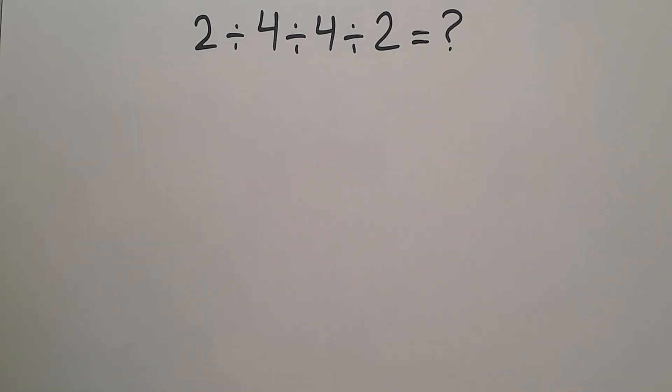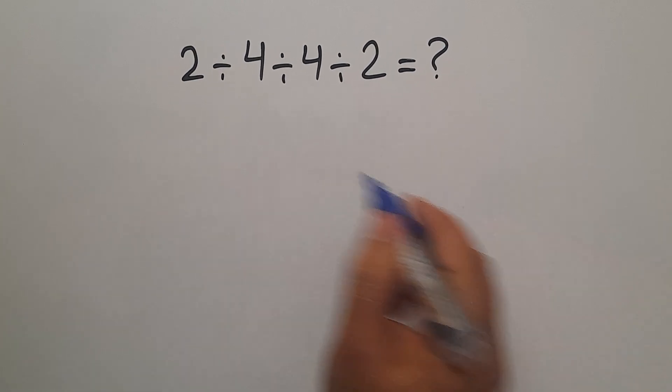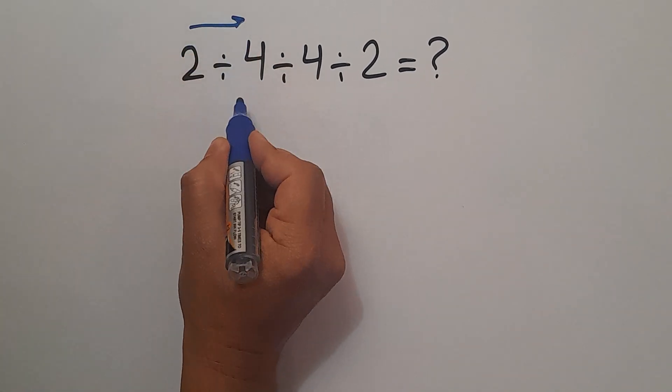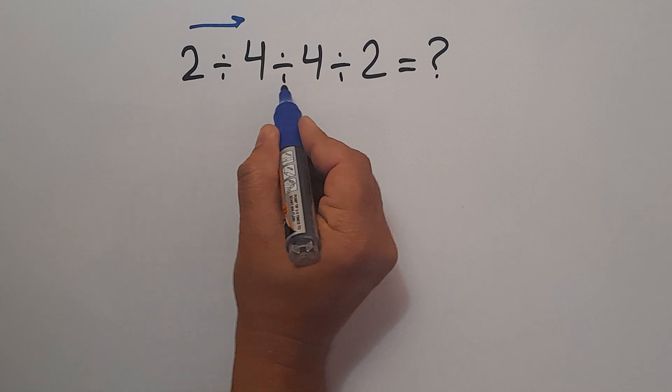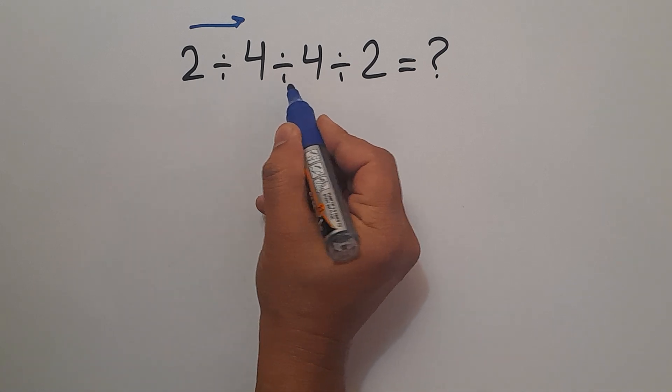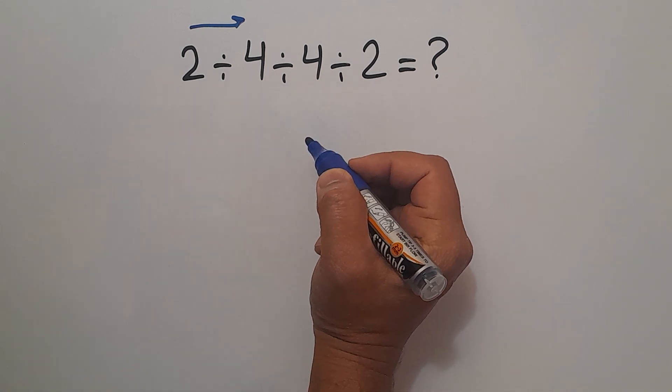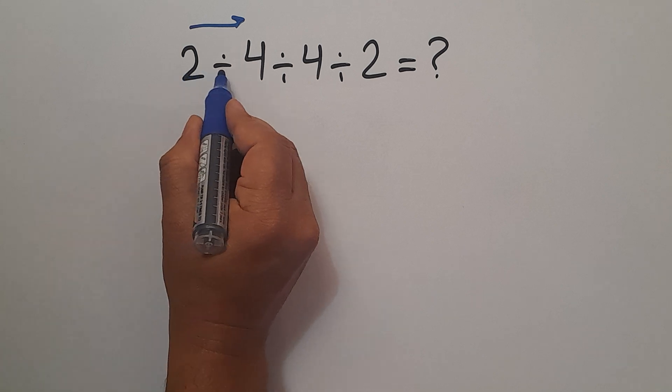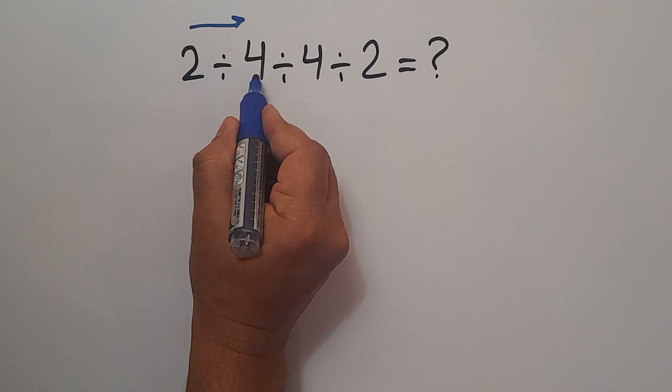Because according to the order of operations we have to work from left to right. So first this division, and then this division, and finally this division. 2 divided by 4 equals